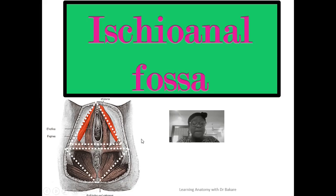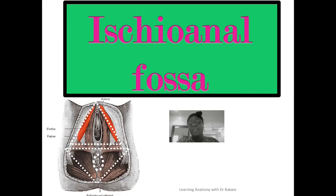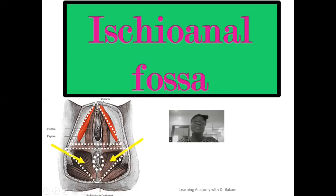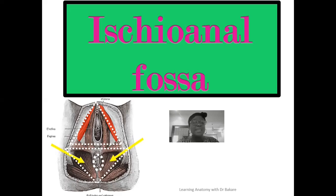Within the central part of the posteriorly placed anal triangle is where we have the opening of the anal canal. The ischioanal fossa is located on both sides of the opening of the anal canal, seen highlighted here in yellow. We have two ischioanal fossae, one on each side. This lecture will focus on the general configuration, the contents or structures within this space, and clinical anatomy.